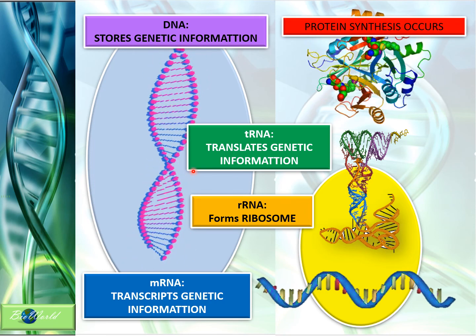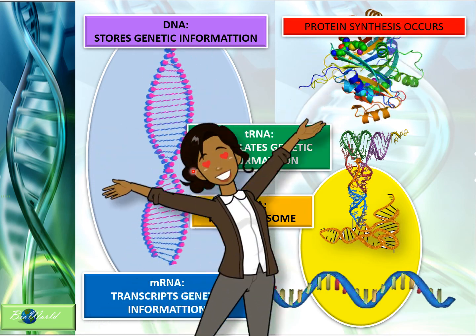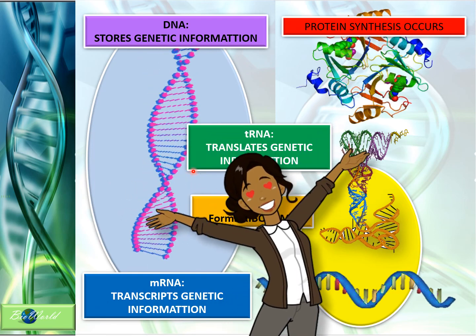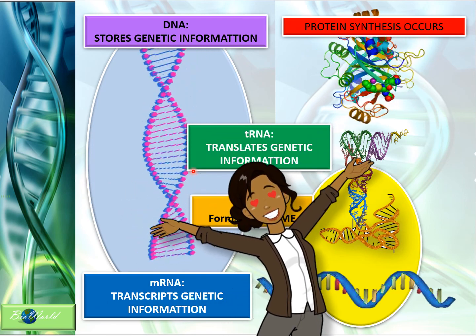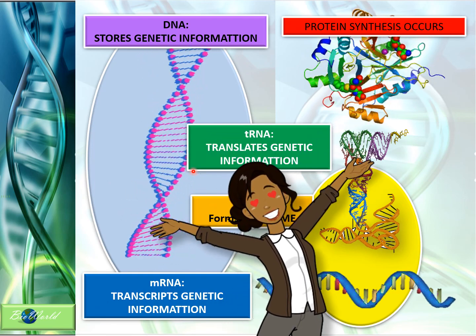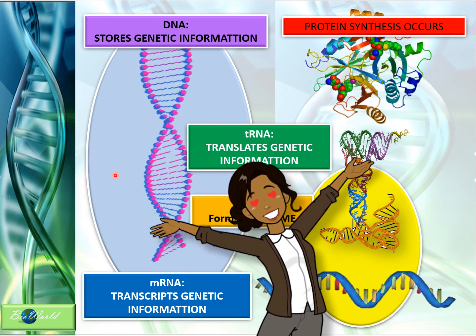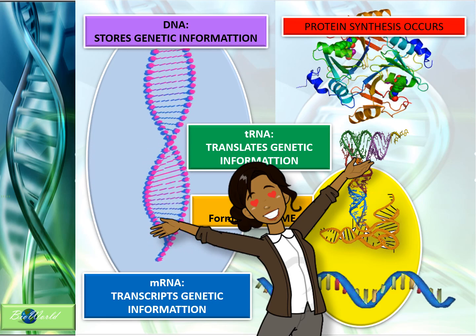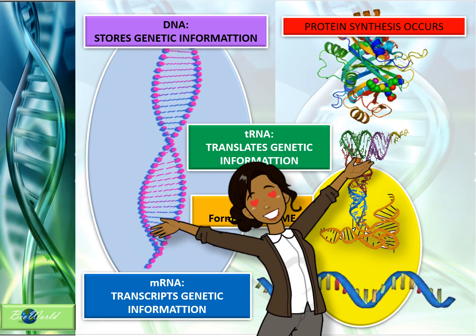The DNA in the nucleus stores the genetic information. The mRNA copies that information through transcription and travels to the ribosome constructed by the rRNA. The ribosome is the meeting point for the tRNA, which translates the genetic information to synthesize protein. That concludes our topic on nucleic acid. Bye bye and see you soon.